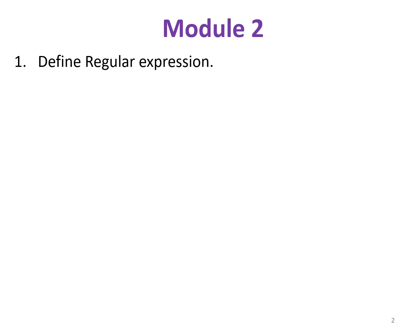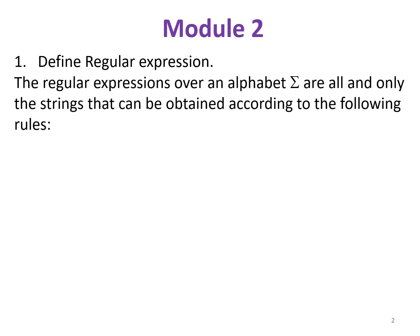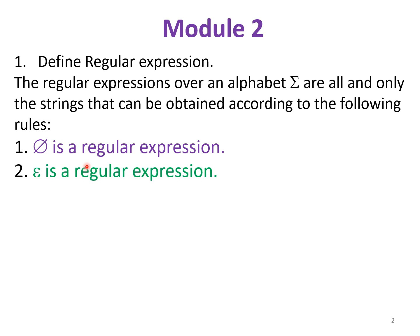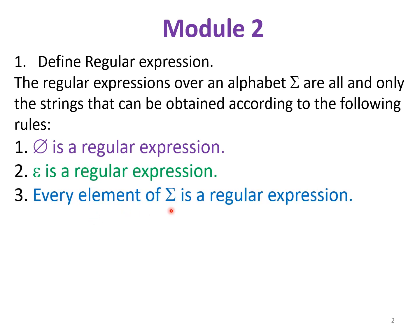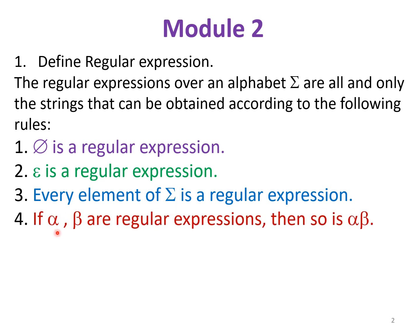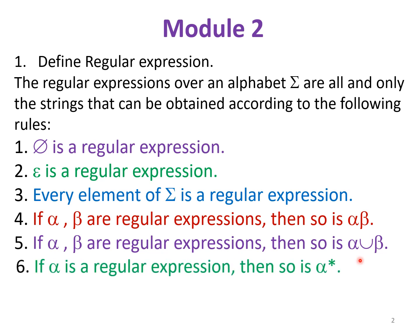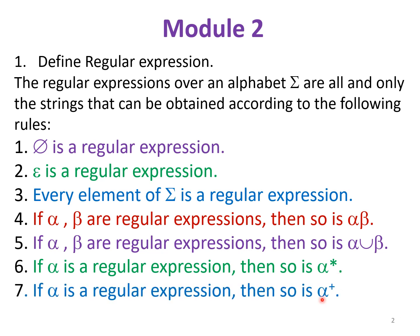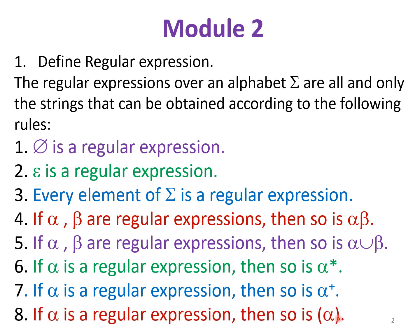First, define a regular expression. The regular expression over an alphabet Σ are all and only the strings that can be obtained according to the following rules: null is a regular expression; epsilon is a regular expression; every element of Σ is a regular expression; if alpha and beta are regular expressions then alpha dot beta (concatenation) is also a regular expression; union is also a regular expression; Kleene star or star closure is a regular expression; alpha raised to plus is a regular expression; and alpha in parenthesis is also a regular expression.